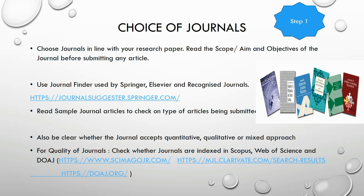The choice of journal plays an important role in your publications, so before you submit any paper, read the scope, aim, and objectives of the journal. Use journal finders such as those provided by Springer, Elsevier, and other recognized publishers to find the most suitable journal. You should also read sample articles to check the type of articles published, and be clear whether the journal accepts quantitative, qualitative, or mixed approaches, as some journals focus only on quantitative papers.